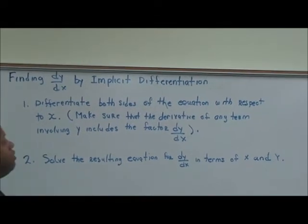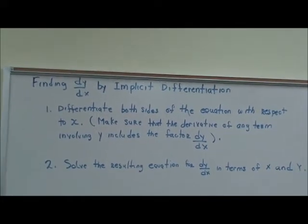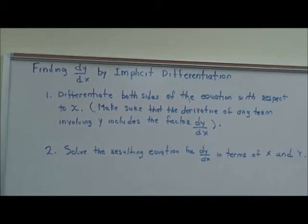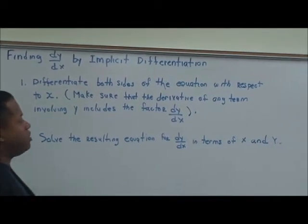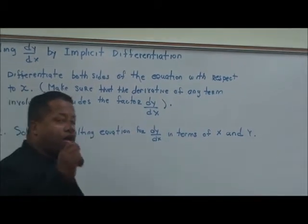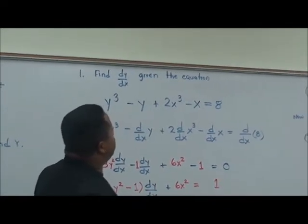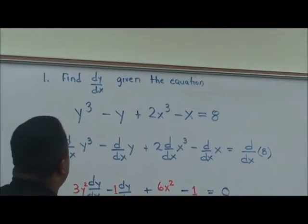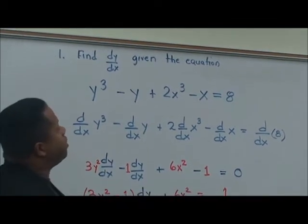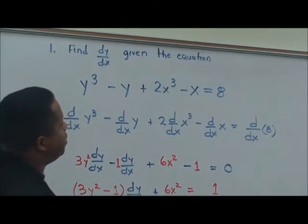Make sure that the derivative of any term involving y includes the factor dy over dx. That's very important. Number two: solve the resulting equation for dy over dx in terms of x and y. Let's look at a problem. Find dy over dx given the equation y cubed minus y plus 2x cubed minus x is equal to 8.